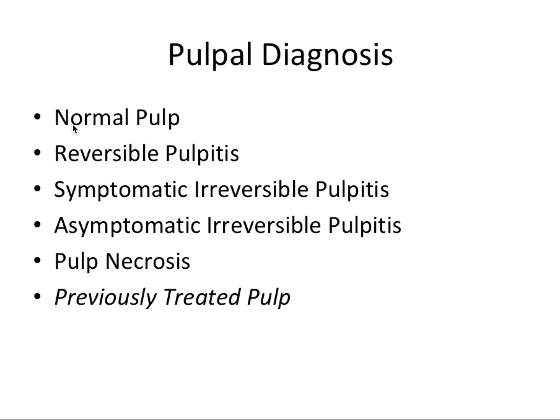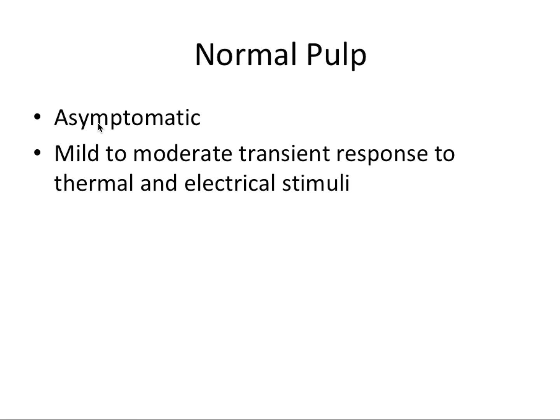For pulpal diagnosis we have: normal pulp, reversible pulpitis, symptomatic irreversible pulpitis, asymptomatic irreversible pulpitis, pulp necrosis, and previously treated pulp. Previously treated meaning it has been or is in the process of receiving some sort of treatment like root canal therapy that has removed the natural pulp tissue. So let's first start with normal pulp.